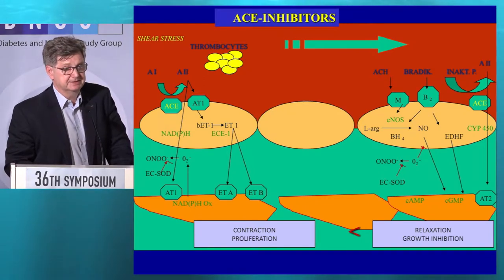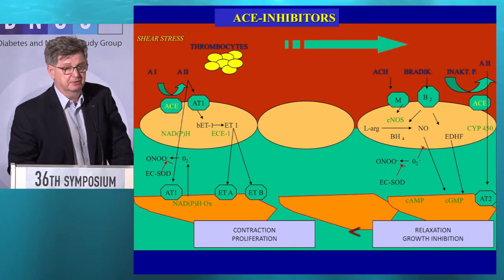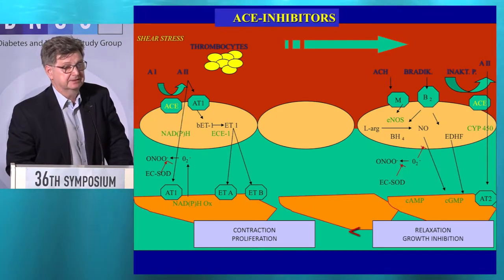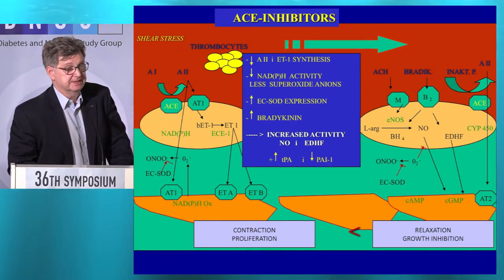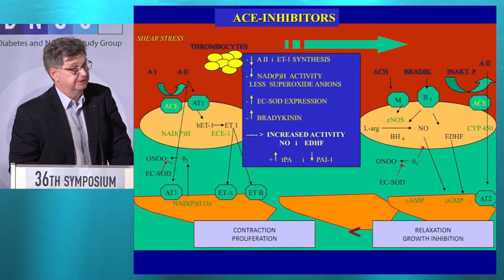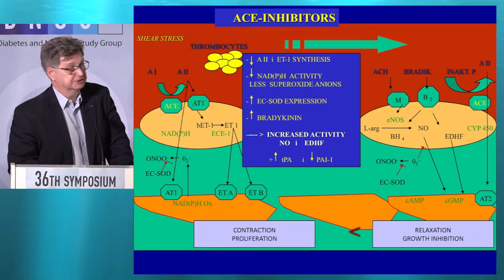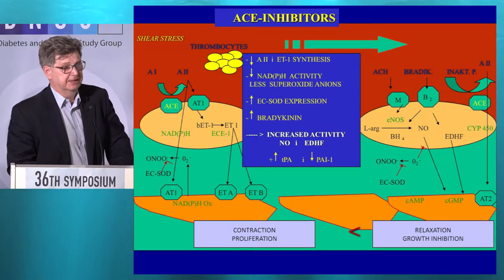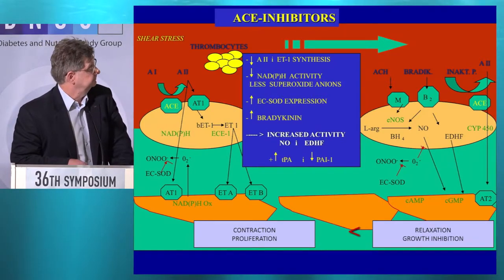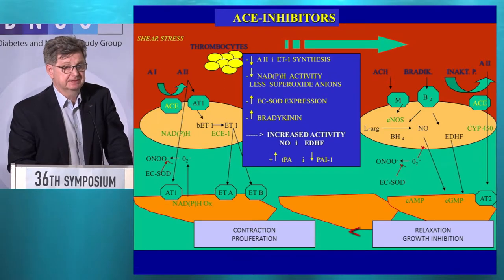What about ACE inhibitors — the drugs which block RAS activity? Interestingly, they have similar activity on the endothelium as physical activity. They decrease synthesis of angiotensin-2, but also of endothelin-1. They increase NO production and also increase production of bradykinin. This leads to more vasodilatation and lower blood pressure — the same mechanism as with physical activity.